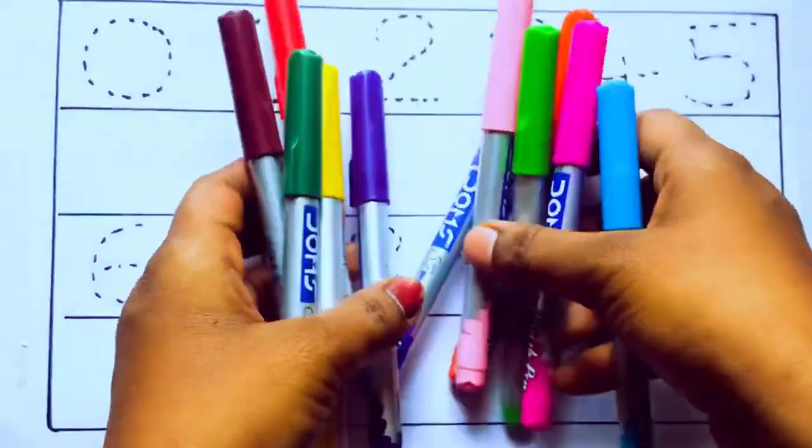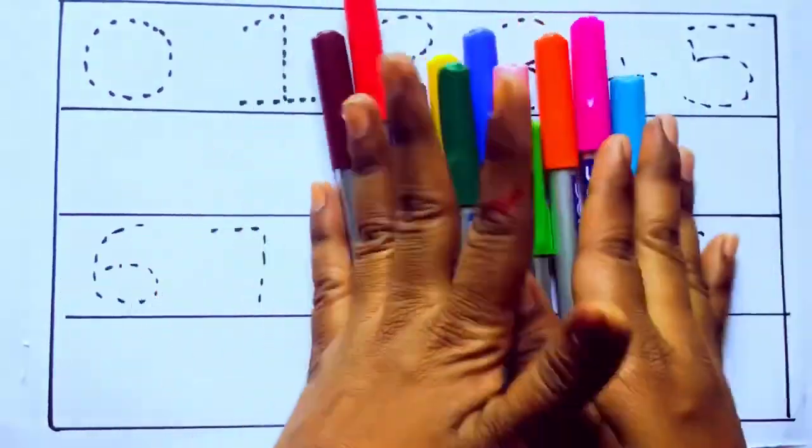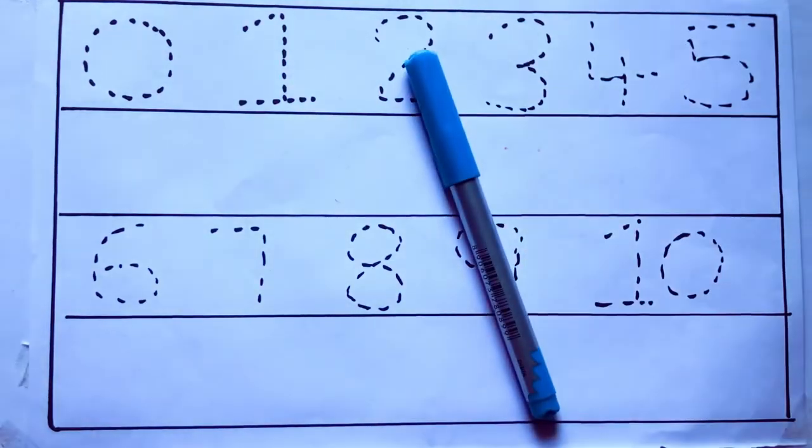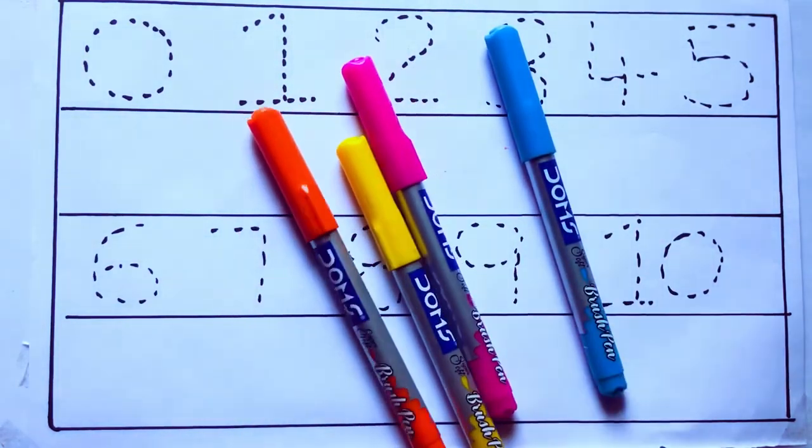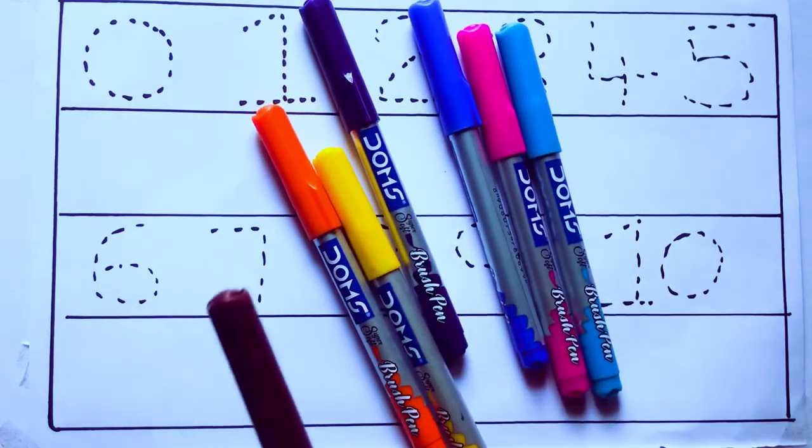Let's learn some colors. These are all the color pencils. Let's learn the names: sky blue color, pink color, yellow color, orange color, violet color, blue color.